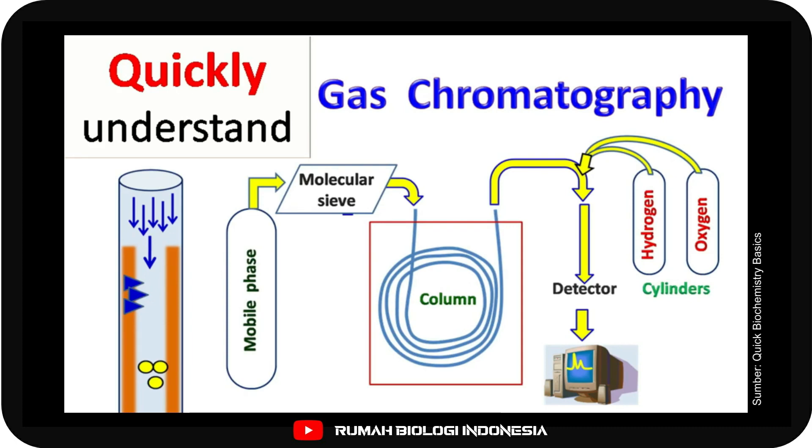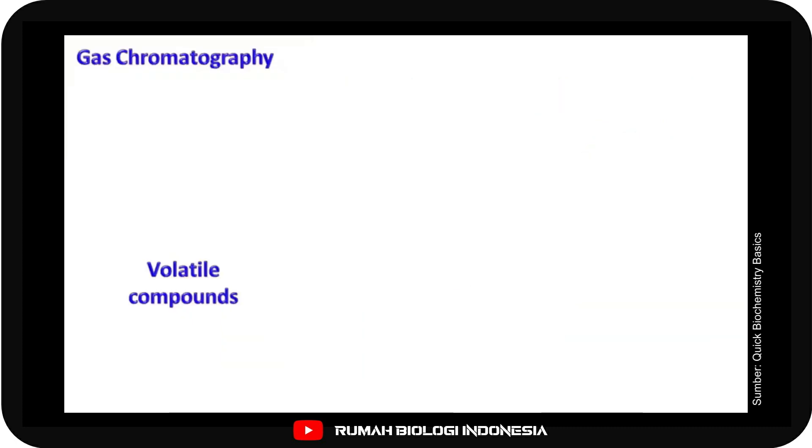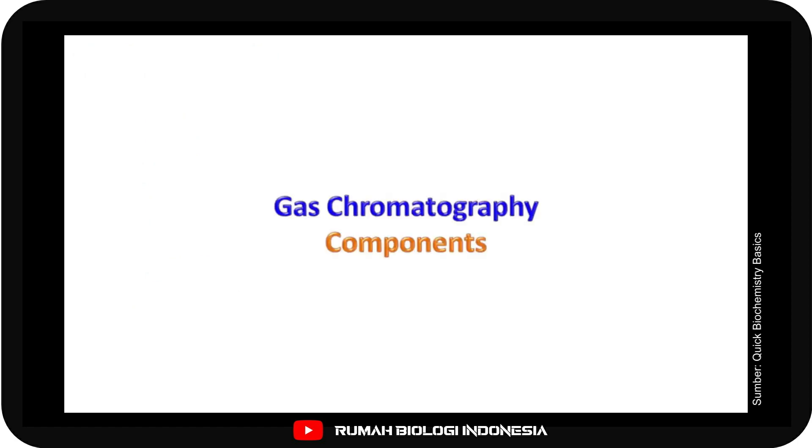Gas chromatography is a chromatography technique used for the separation of volatile compounds. Volatile compounds are compounds that get easily vaporized at room temperature. Let's see the components of gas chromatography.